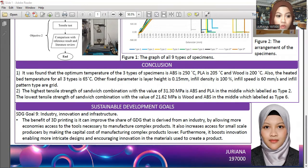The Sustainable Development Goal for this project is Goal 9: Industry, Innovation, and Infrastructure. The benefit of 3D printing is that it improves this SDG by allowing more economies access to the tools necessary to manufacture complex products. It also increases access for small-scale producers by making the capital cost of manufacturing complex products lower.